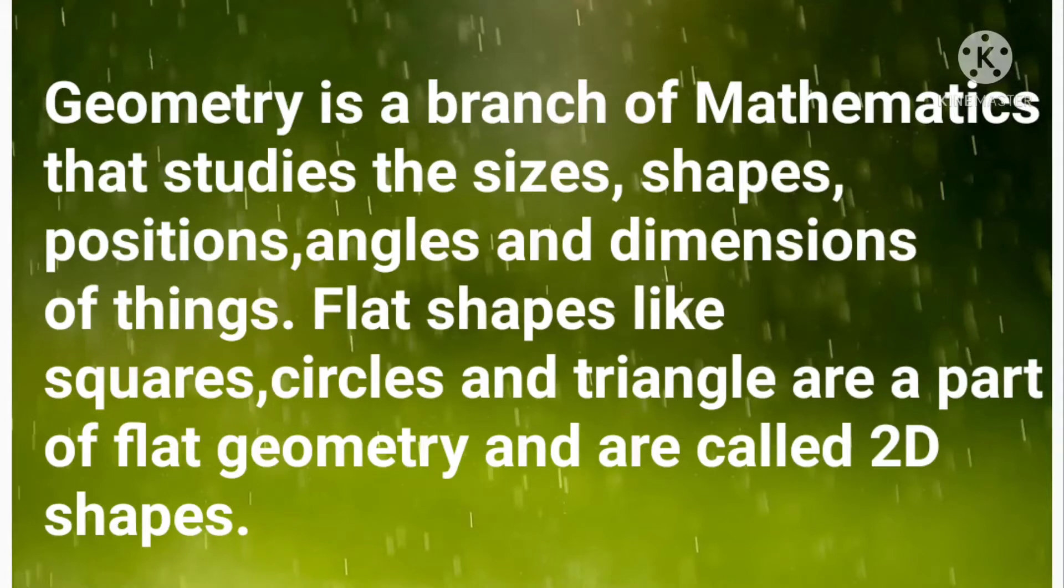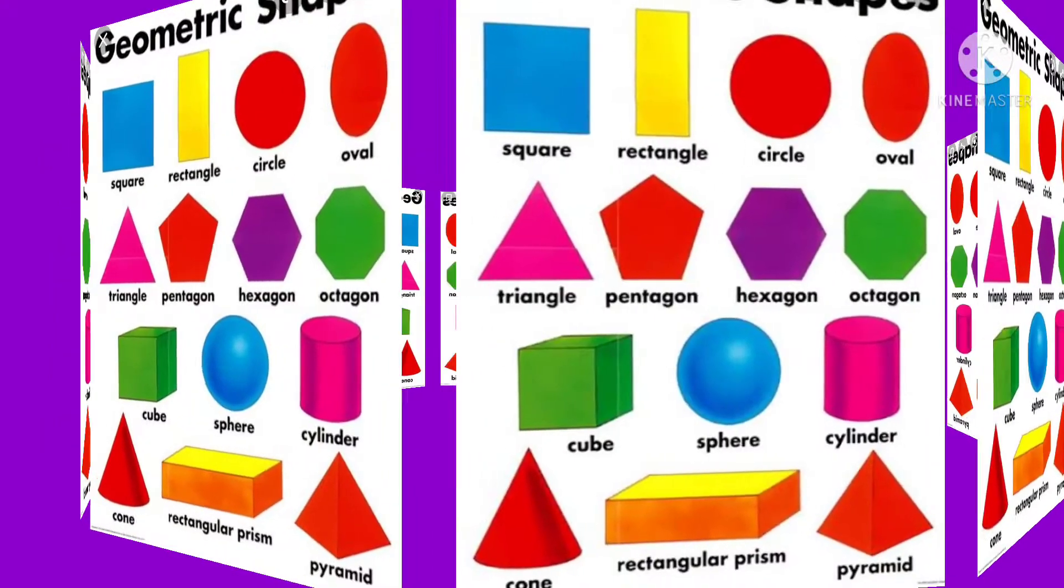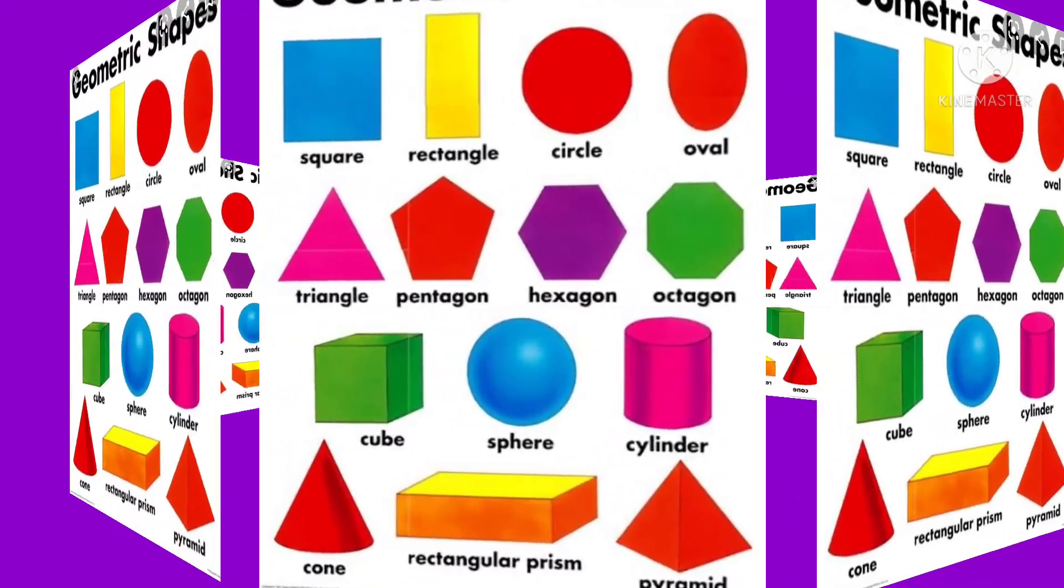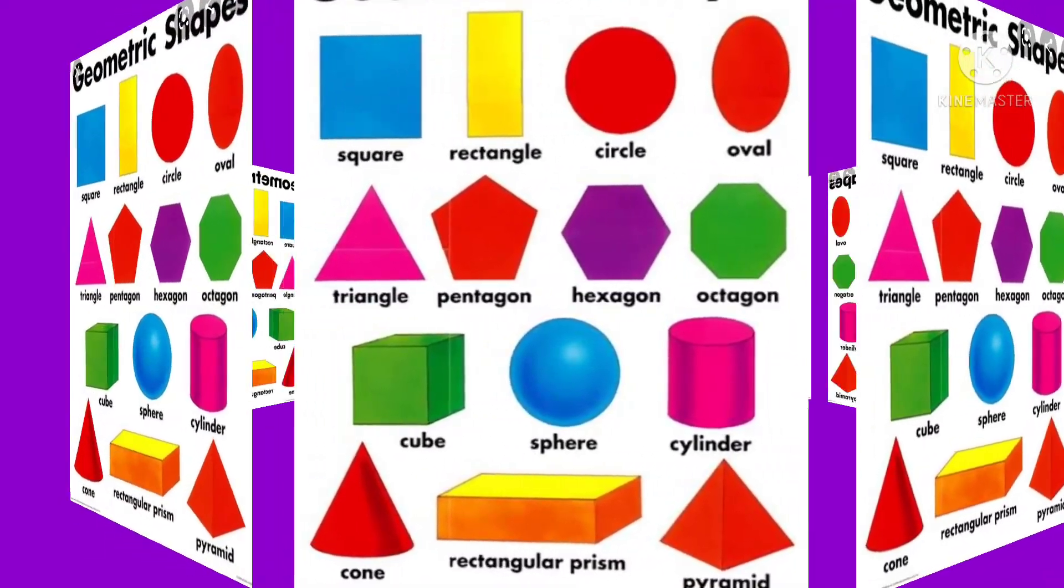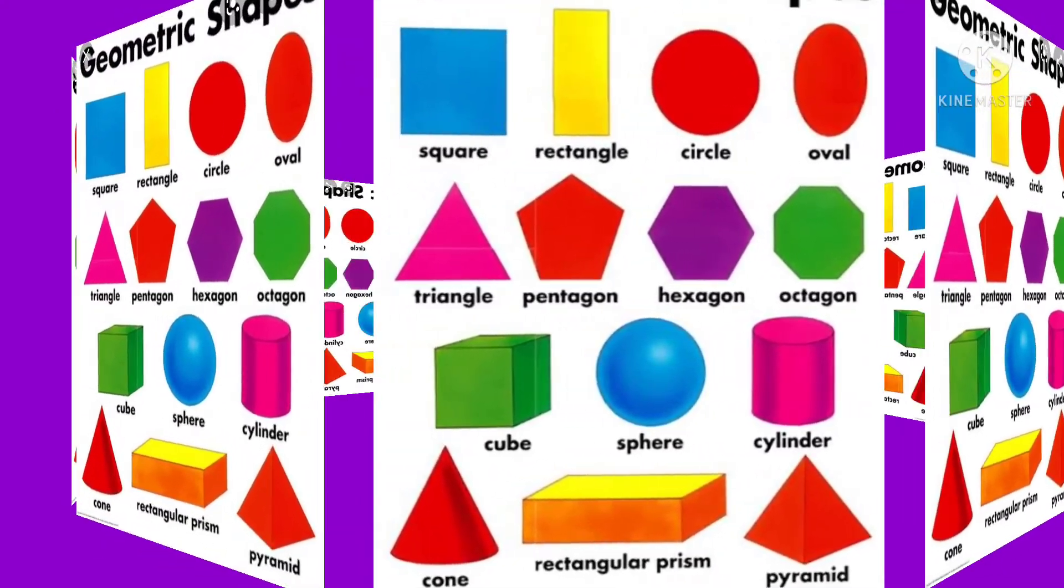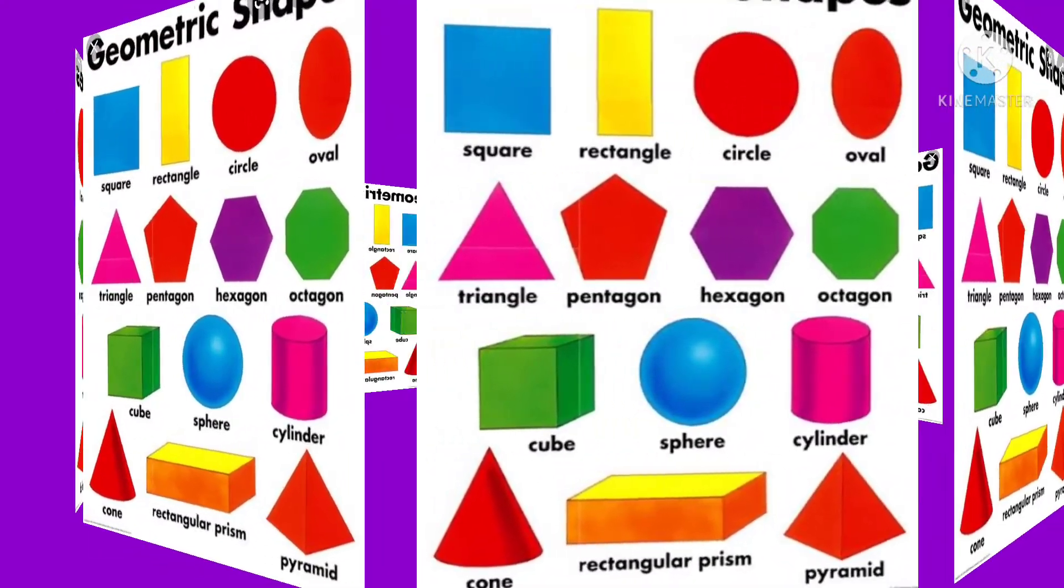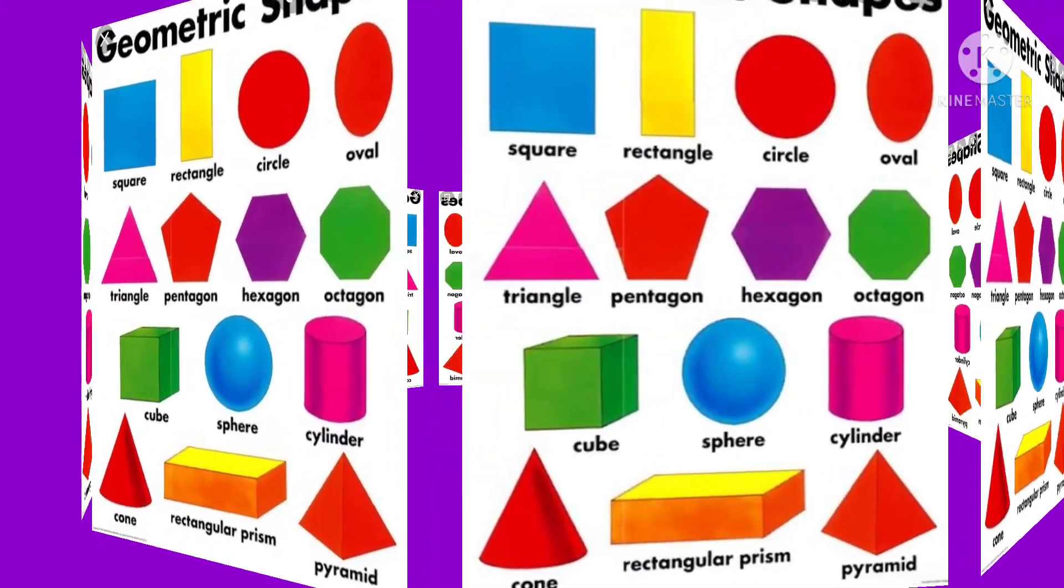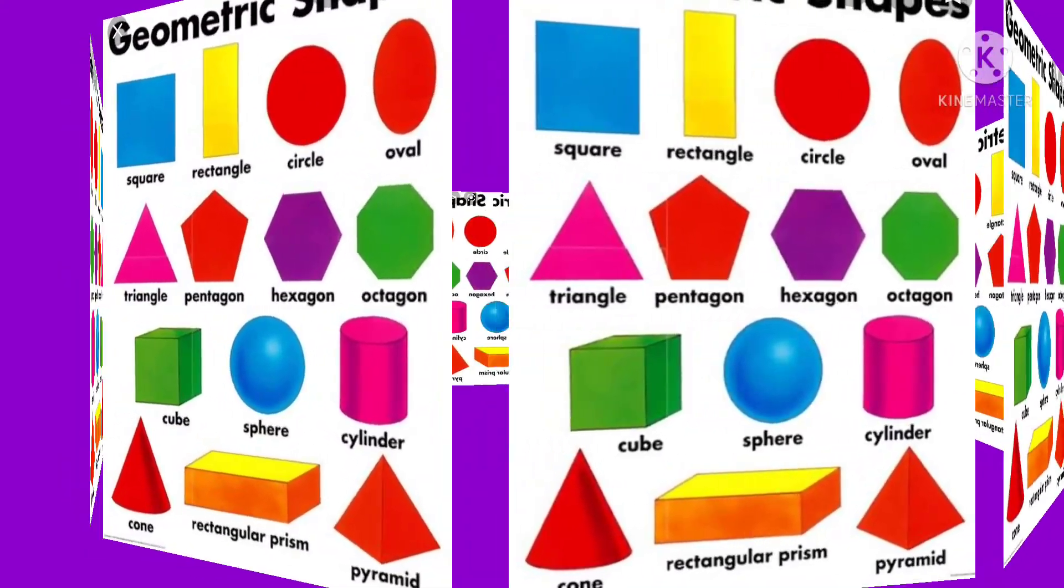And one more thing, geometry shapes are given in your book. Watch the image: square, rectangle, circle, oval, triangle, hexagon, pentagon, octagon, cube, and cylinders. These are all the geometric shapes.